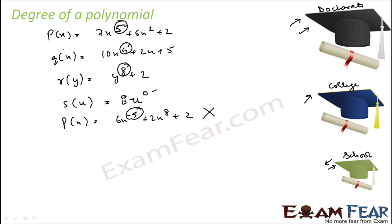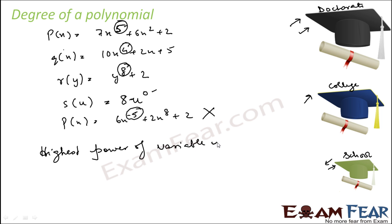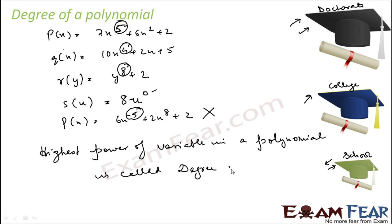The person with a doctorate degree has more power, knows more — similarly when you talk about degree of a polynomial, you talk about power. The maximum power determines the degree. Let me repeat: the highest power of a variable in a polynomial is called the degree of that polynomial.